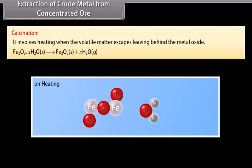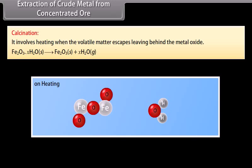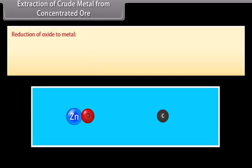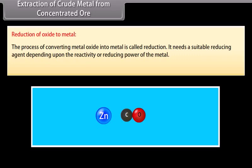Calcination: It involves heating when the volatile matter escapes leaving behind the metal oxide. Roasting: It is a process in which ore is heated in regular supply of air at a temperature below the melting point of the metal. Sulphide ores are converted into oxide by roasting. Reduction of oxide to metal: The process of converting metal oxide into metal is called reduction. It needs a suitable reducing agent depending upon the reactivity or reducing power of the metal. For example, carbon, carbon monoxide, aluminum, and magnesium.